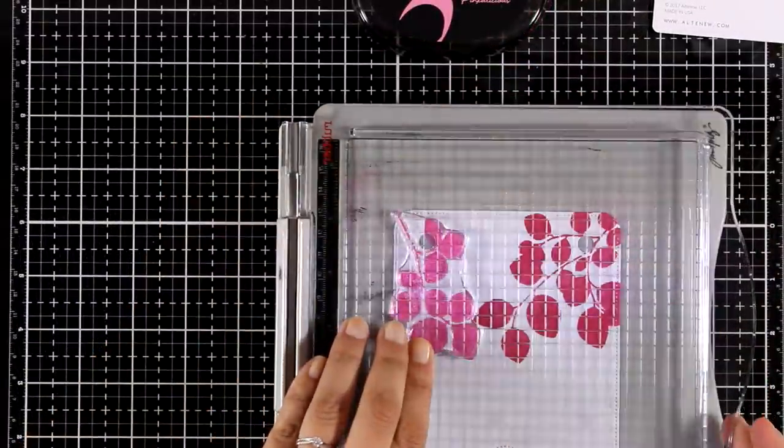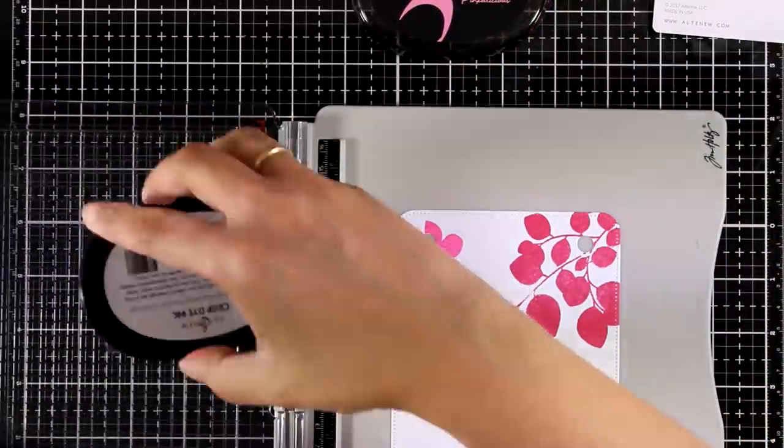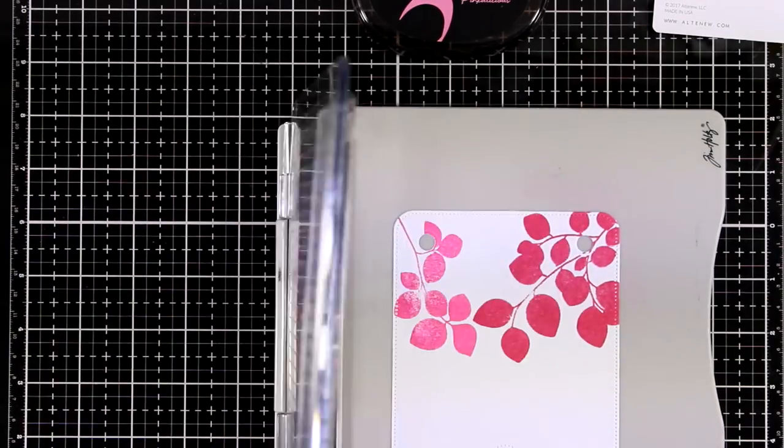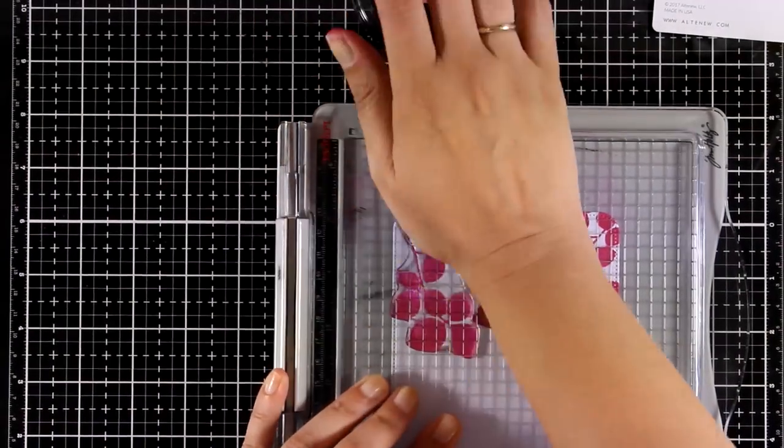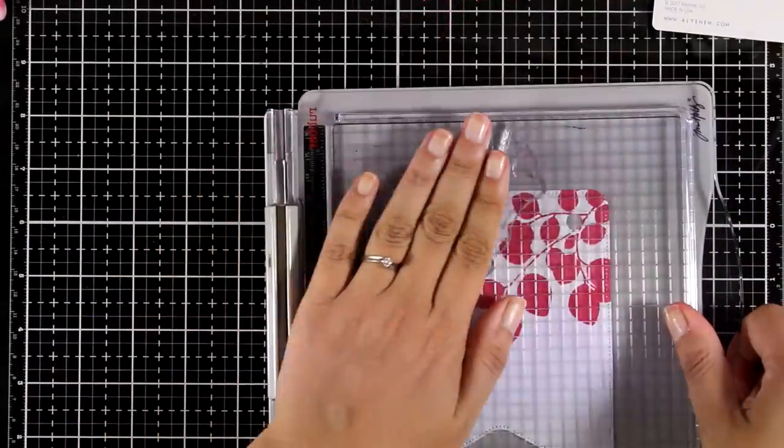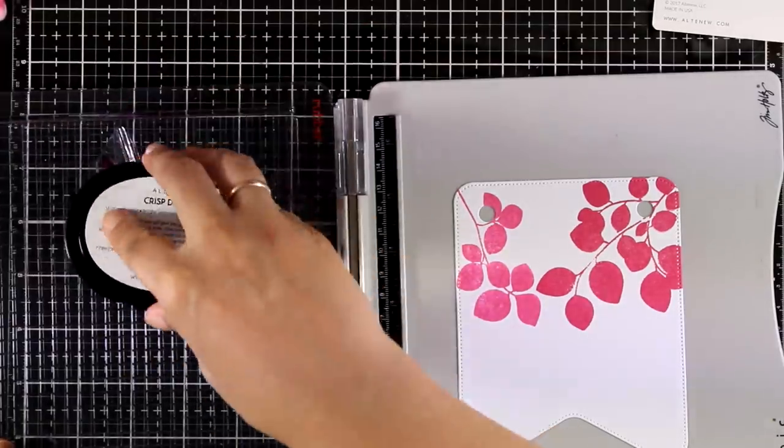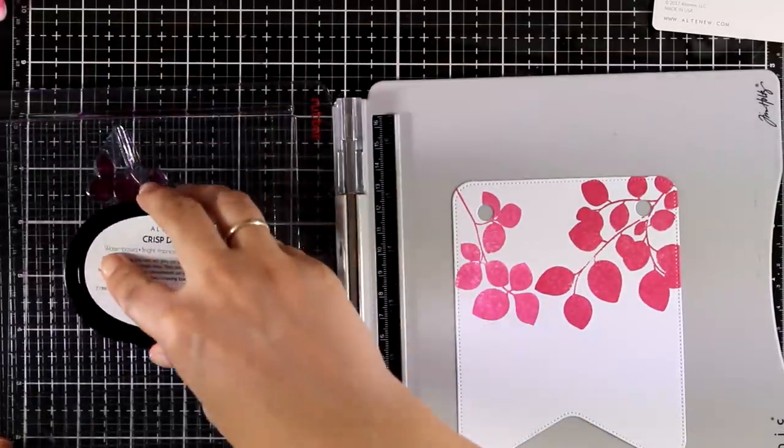The banner die comes with two little circle dies that I have used here to cut out those little holes at the top of my banner, but these are completely optional. If you don't want them on your banner, you don't have to use them and cut them out. However, I was planning to use some ribbon on my panel and that's why I used them.